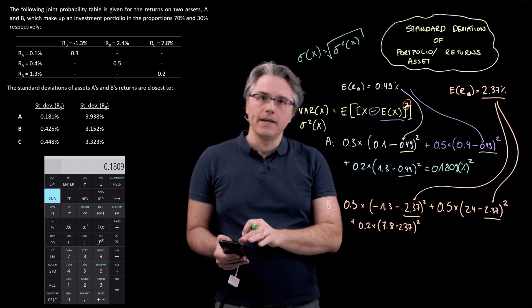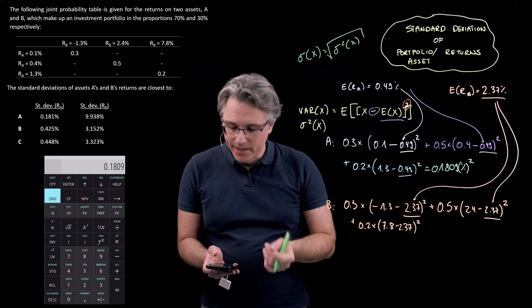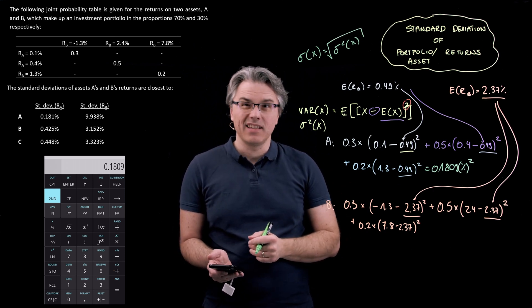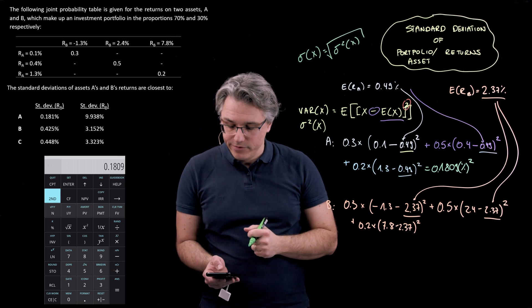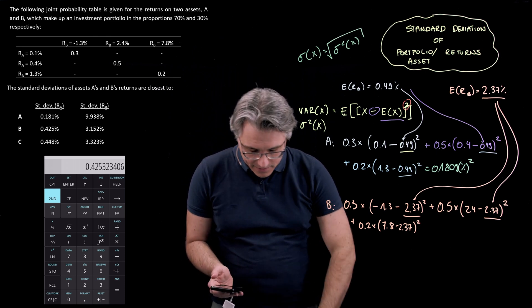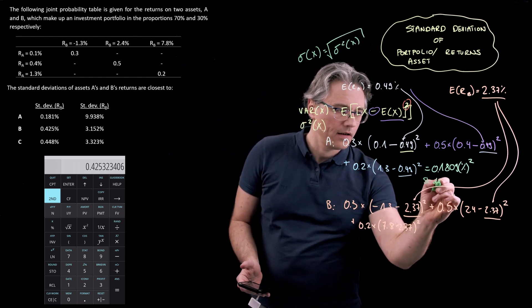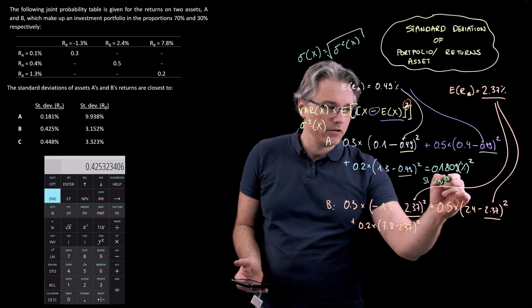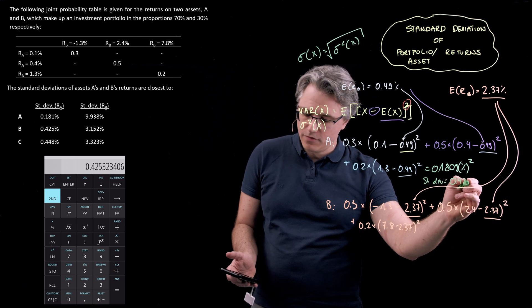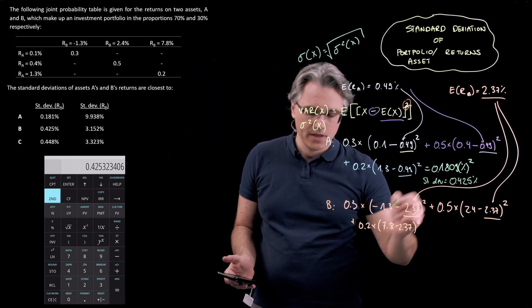So as I've got the answer right now on my calculator, let me just simply press the key with square root on it. OK. And I can see that the standard deviation comes in at, for portfolio A or asset A, sorry, 0.425 percent.